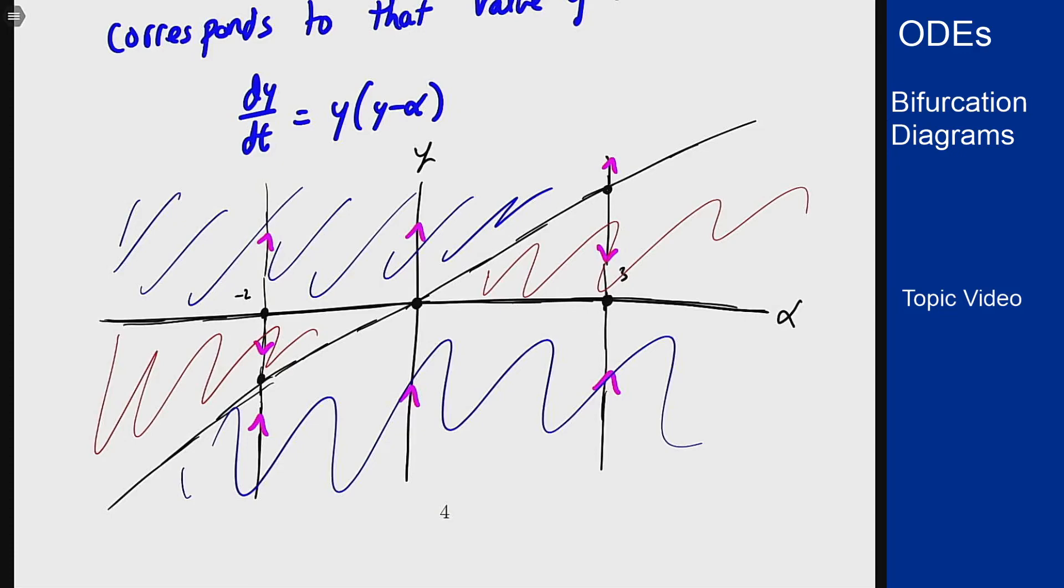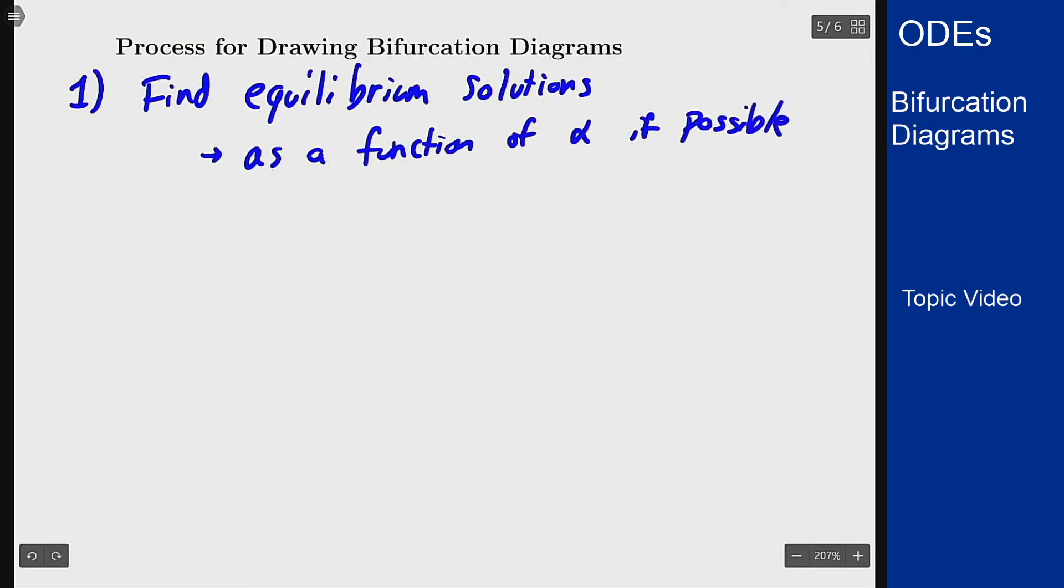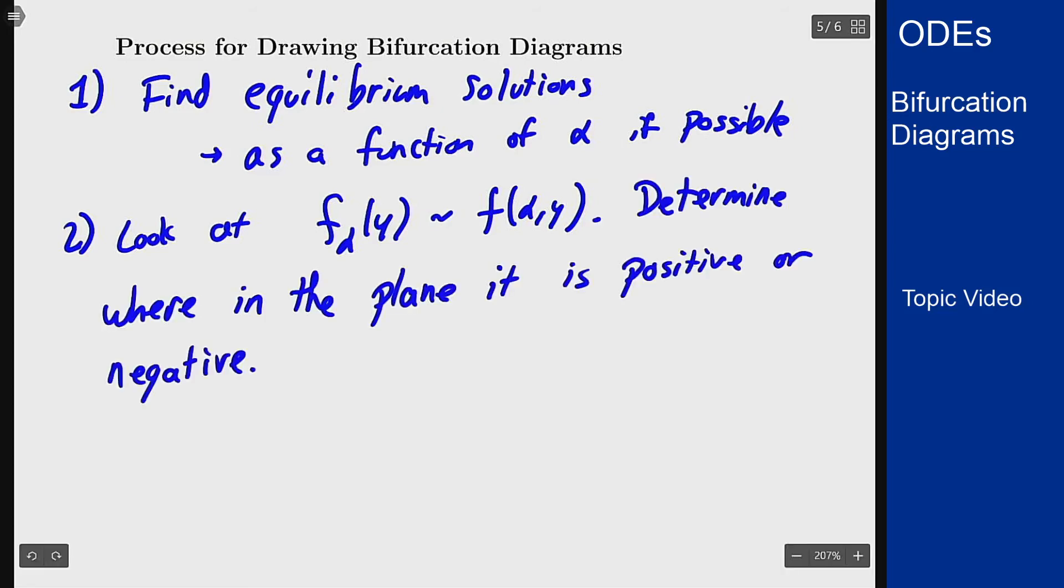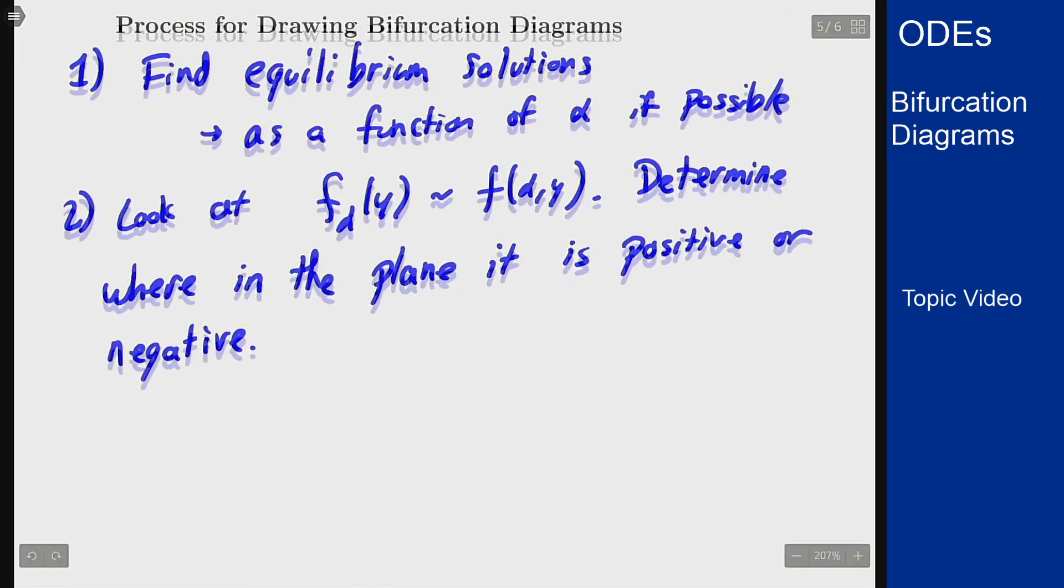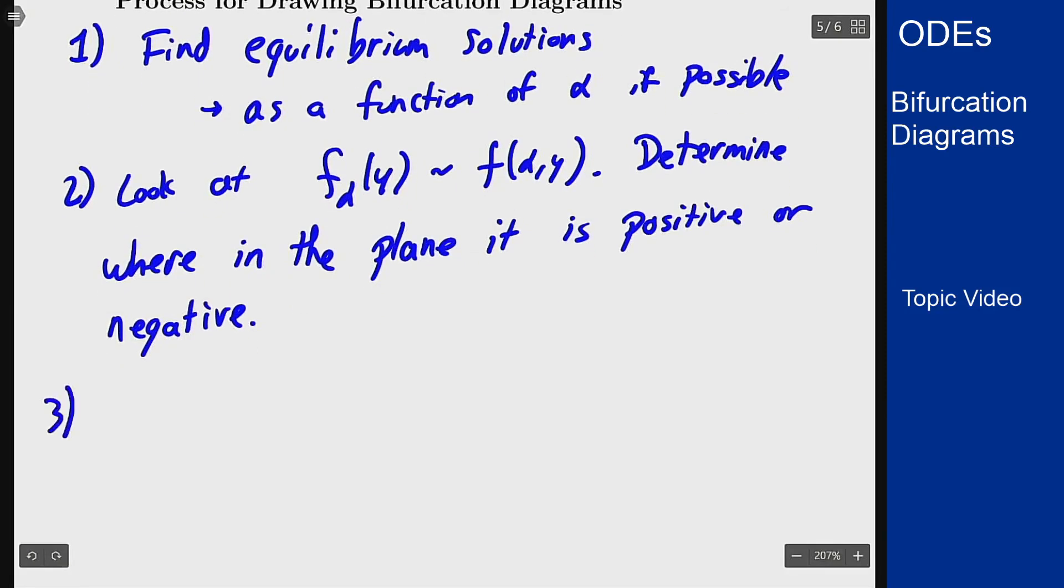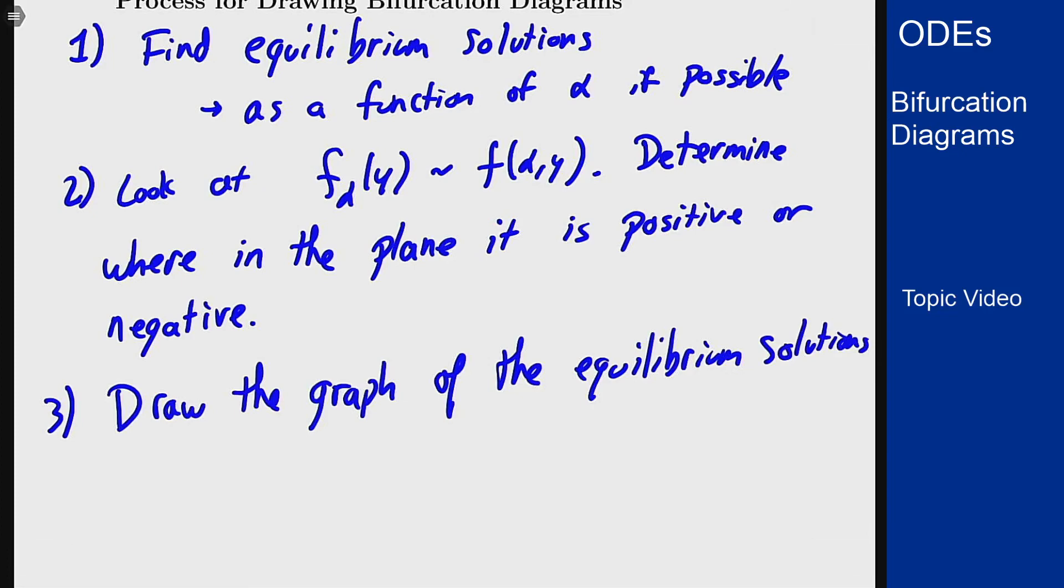How do you go about drawing these pictures? The main process is I want to figure out where my equilibrium solutions are for any value of alpha. You generally want to find these as a function of alpha if possible. Then I want to look at the function f alpha of y as an actual two variable function and determine where in the plane it's positive or negative. Because we've already found where it's zero, we can just pick basically one point in every chunk of the graph. Then you draw the graph of equilibrium solutions and shade the regions where it's going up or down.